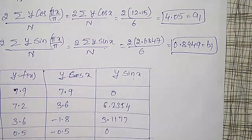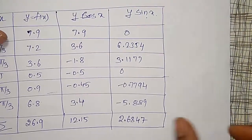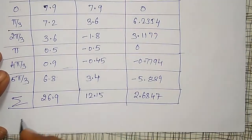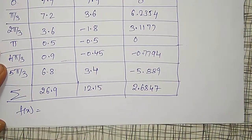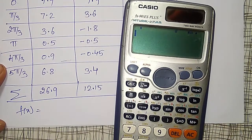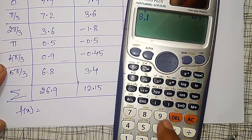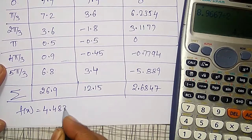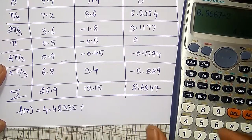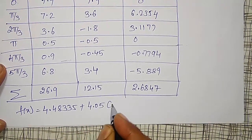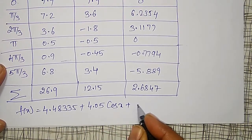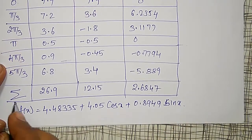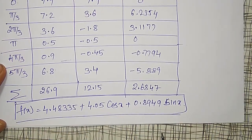Use these coefficients a_naught, a1, and b1 in the first harmonic. Therefore, my f(x) is equal to a_naught divided by 2, a_naught value is 8.9667 divided by 2, it comes out to be 4.48335, plus a1, 4.05, into cos x, plus b1, 0.8949, into sin x. This is the required Fourier first harmonic series.